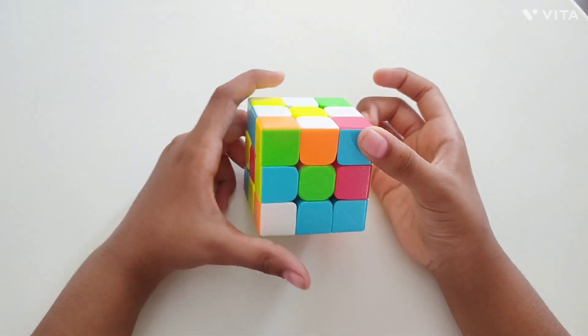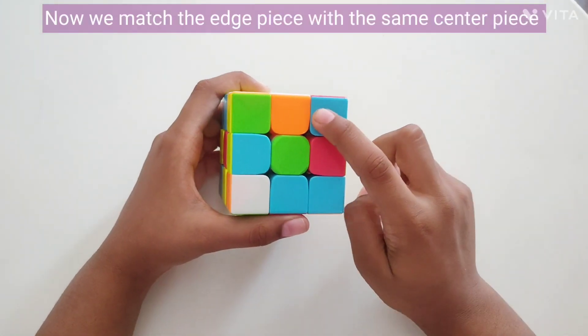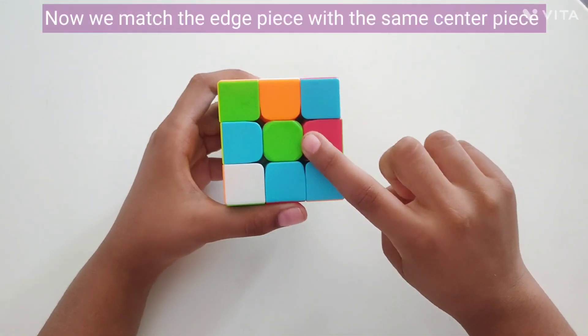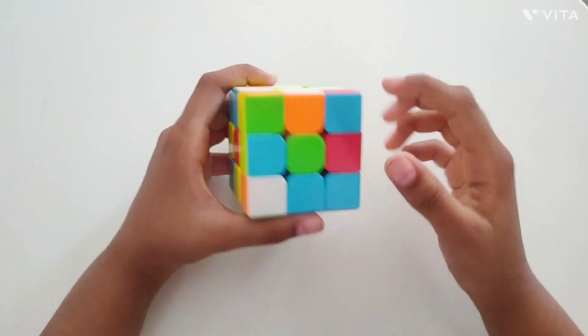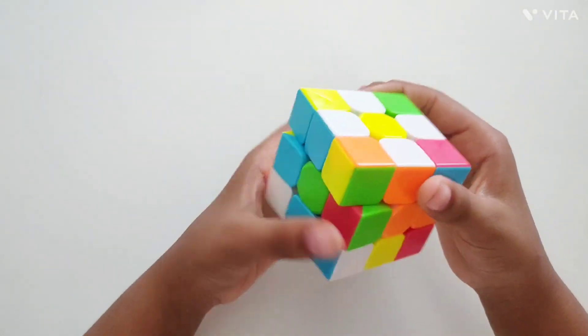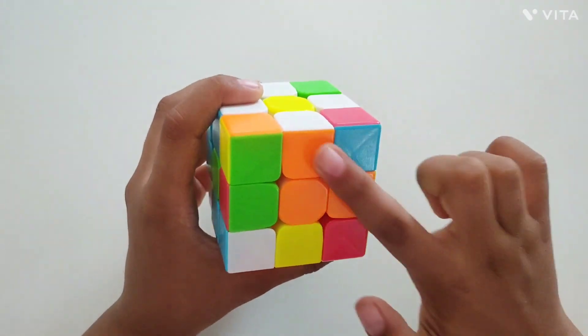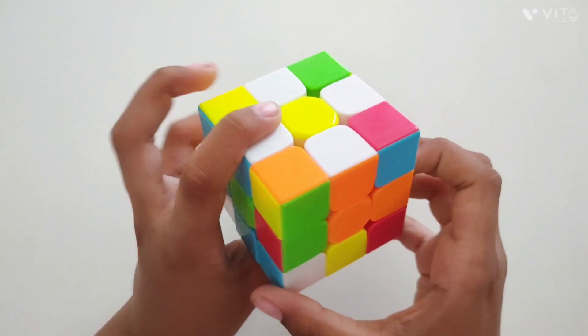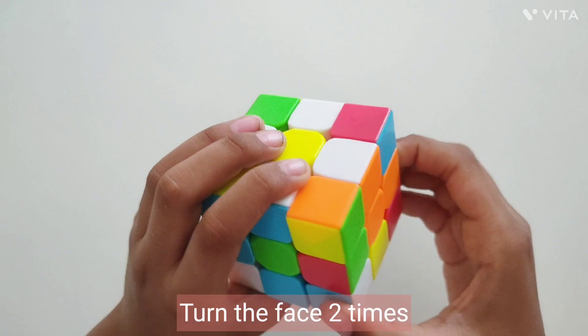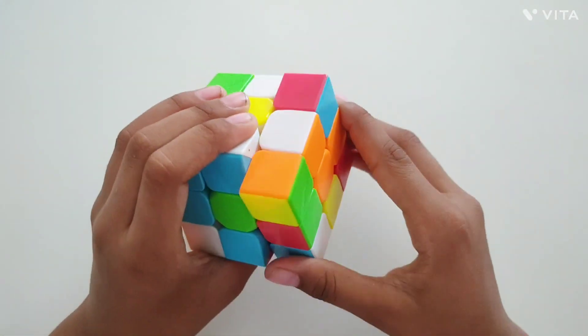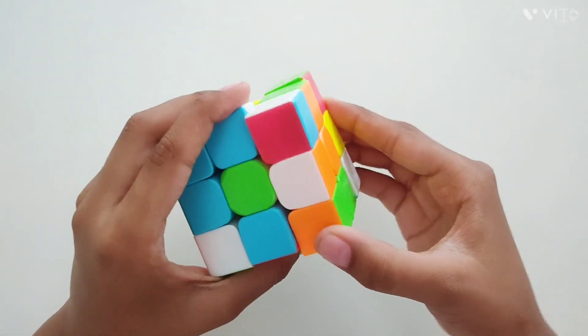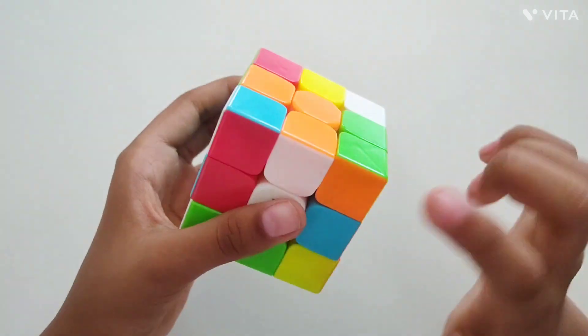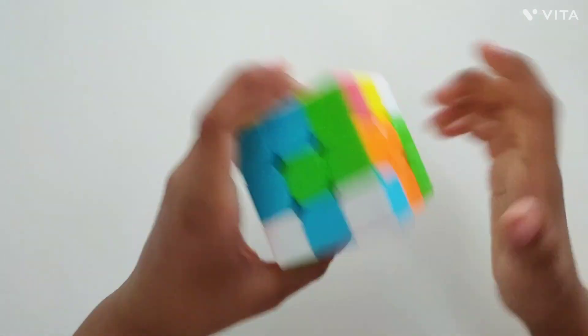Now we have to match the same edge piece with the same center piece. The oranges match. Now we have to turn this two times. One, two, it went down, right?